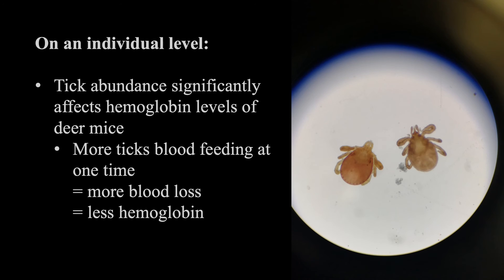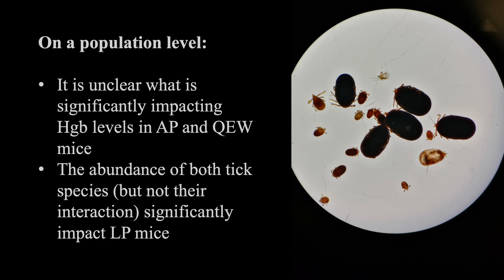Similarly, on an individual level, the abundance of ticks is shown to affect hemoglobin levels significantly, which makes sense since when more ticks are feeding on a host at one time, more blood is lost, in turn reducing the hemoglobin level further. In comparing the populations, it is unclear what is significantly affecting hemoglobin levels in mice from Algonquin and Queen Elizabeth's Wildlands, but the abundances of both tick species individually are significantly affecting hemoglobin levels in Long Point, even though deer ticks are not as prevalent or intense at this site compared to wood ticks.